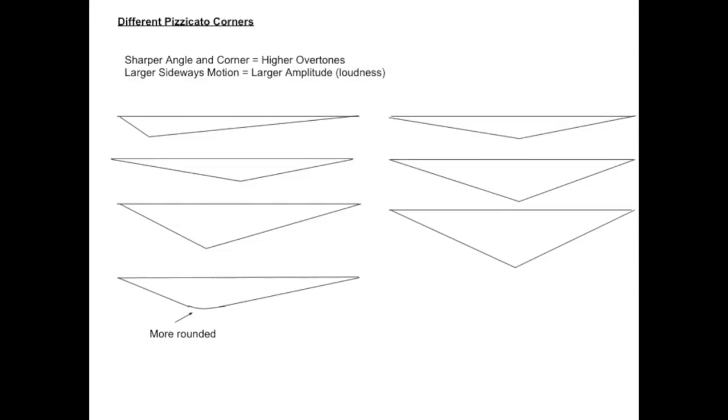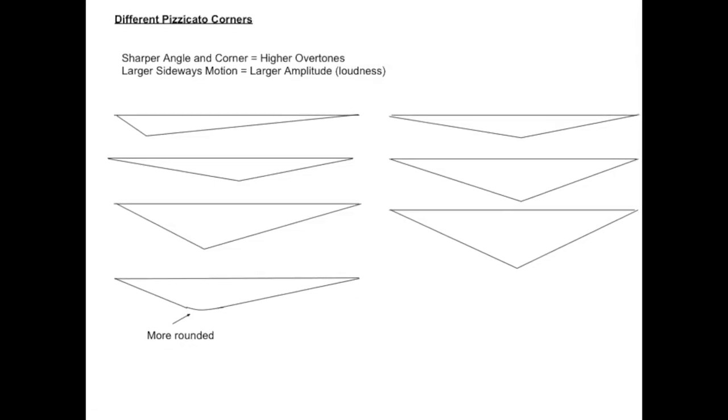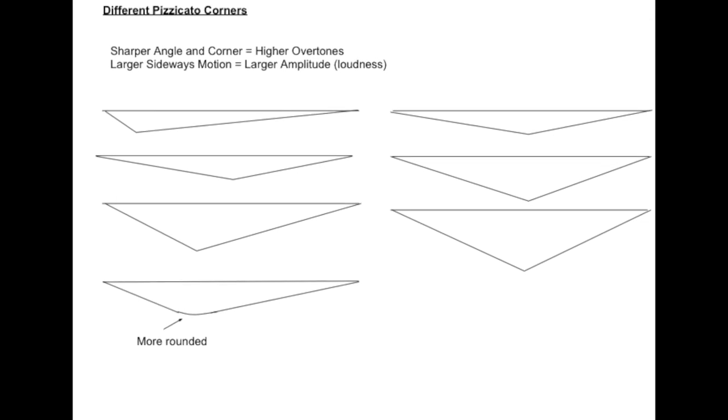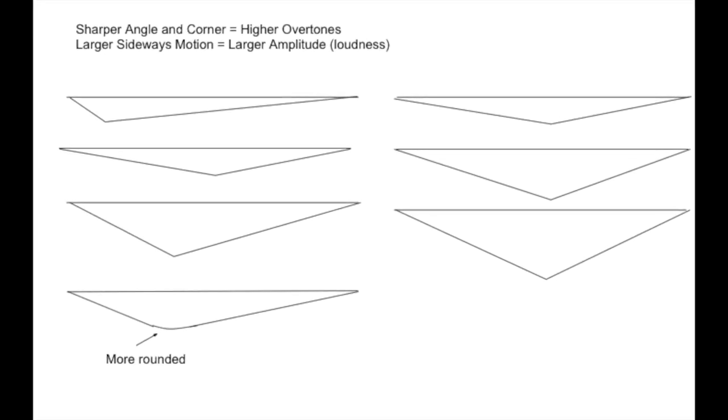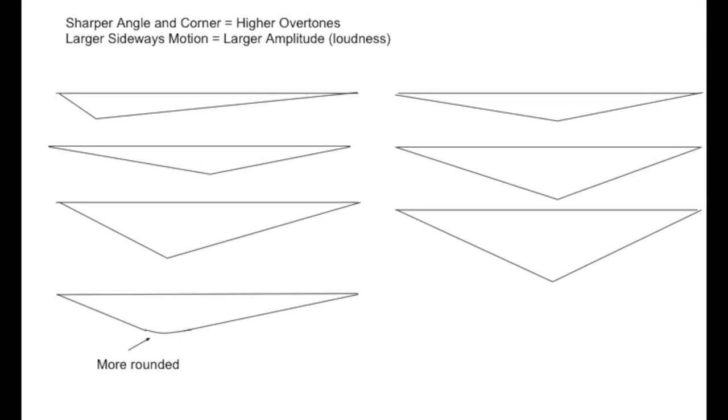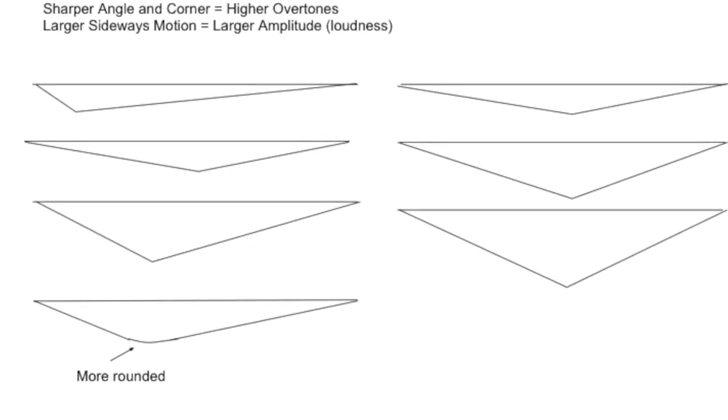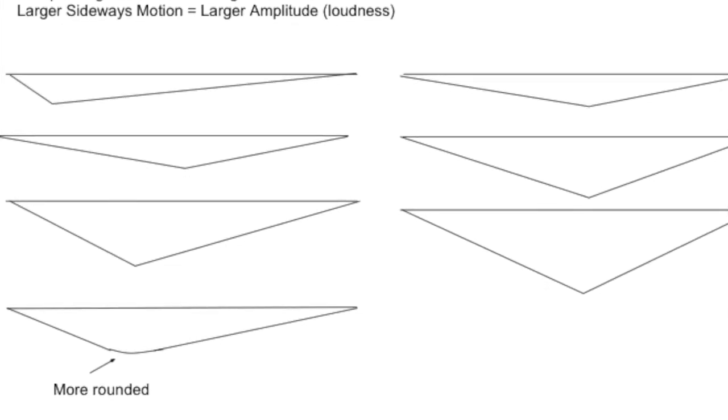The portion of your finger that you pluck the string with, or how soft the pad you use, will also give you a different sound. That's because the corner you create is different. If it's a very sharp corner, you're going to have a lot of high overtones. If it's a more rounded corner, you're going to have a lot of lower overtones.